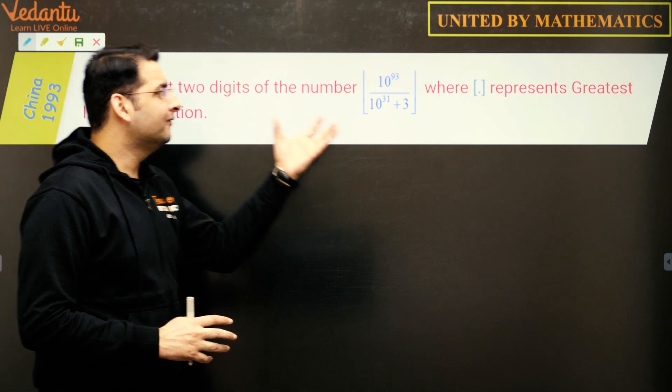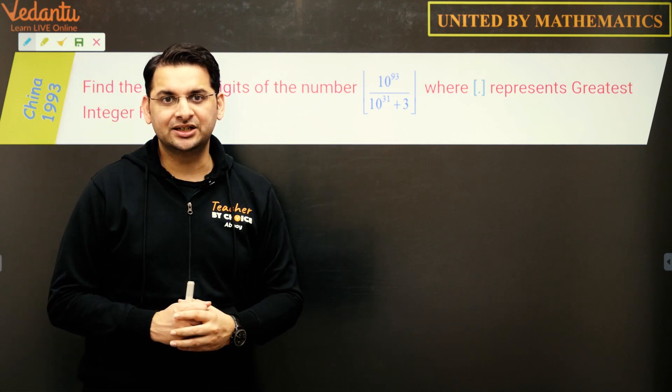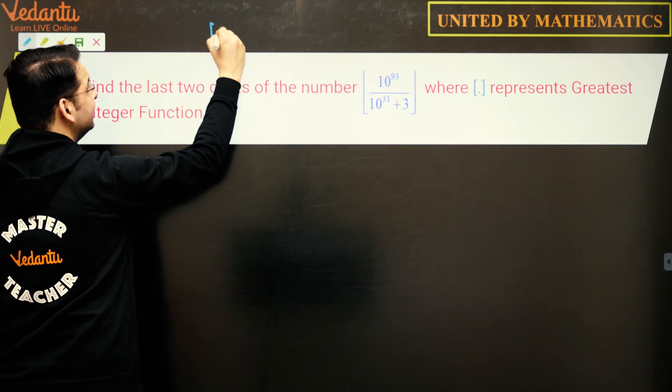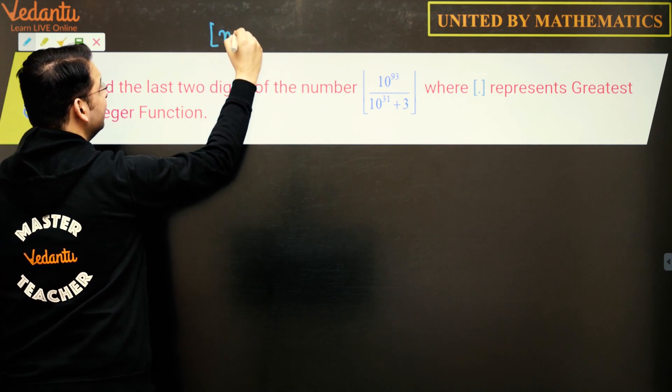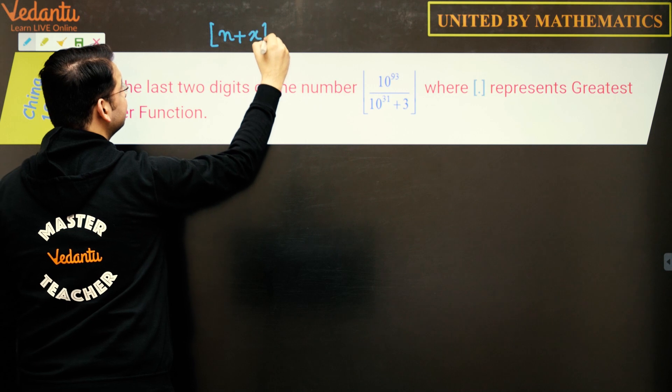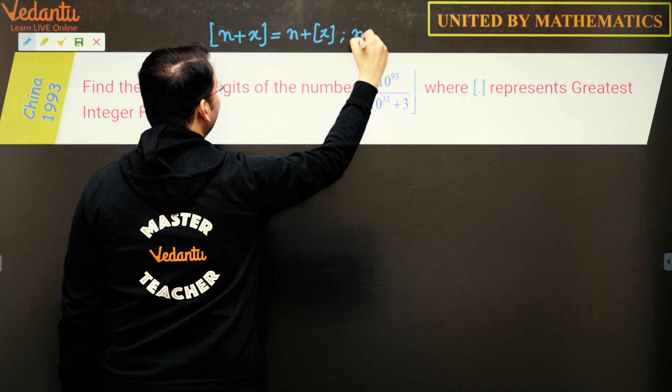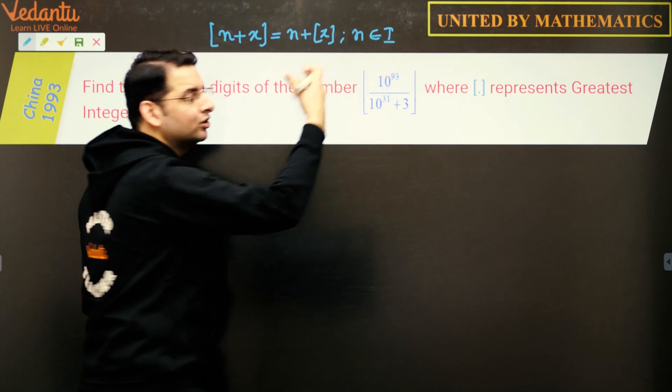Now this would involve some properties of greatest integer function and we need to know some of the properties. One of the properties that we'll be using in this question would be greatest integer of n plus x would be n plus greatest integer of x, where n is an integer.